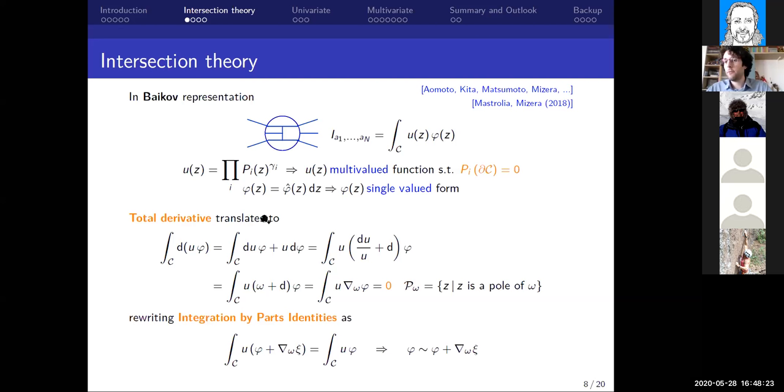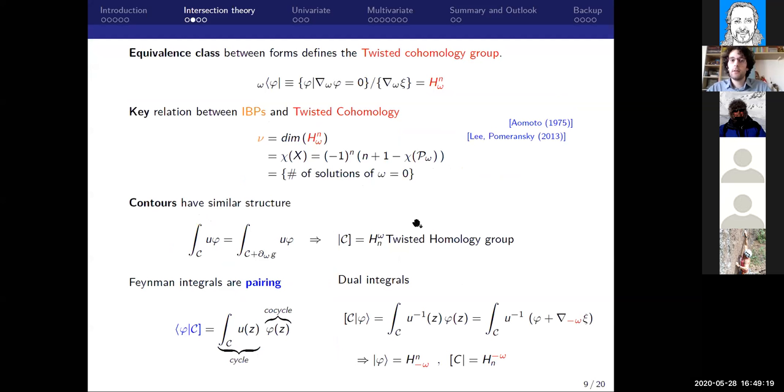Now we can ask ourselves, how do IBPs translate into this language? How can we translate the total derivative? If we take the total derivative of u times phi, with some algebraic passages we can rewrite it as u times nabla phi, where nabla is an operator containing the differential plus the connection omega, which is given by u. This object clearly vanishes because of IBPs. We can notice that if we take an integral u times phi, if we add something that vanishes upon integration, the integral doesn't change. So we can add this nabla of psi, which is an arbitrary function. In some sense, phi is equivalent to phi plus nabla psi.